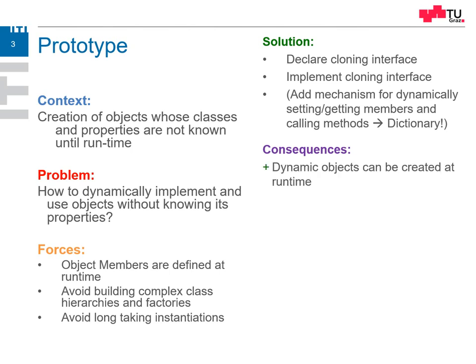What are the consequences? We can now create dynamic objects — objects which we have never known or seen before. We can add and remove properties. We can bypass the class system, which is often very useful, though I will speak about this part again later because it is not always a benefit. We don't have a complex inheritance hierarchy anymore — we can just create objects, clone them, change them. The inheritance is created on the fly; it's more like a copy hierarchy or reference hierarchy.